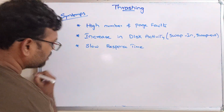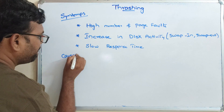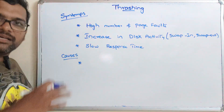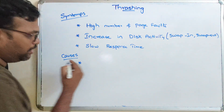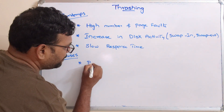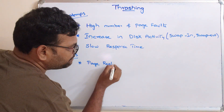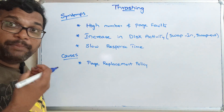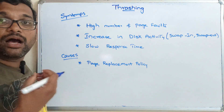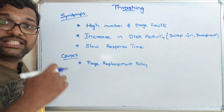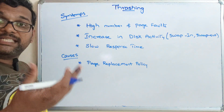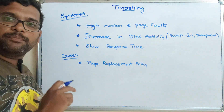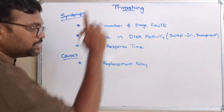Now, what are the causes of thrashing? The first cause is a poor page replacement policy. If the page replacement policy chosen among the different page replacement algorithms is very poor, then thrashing will automatically occur.